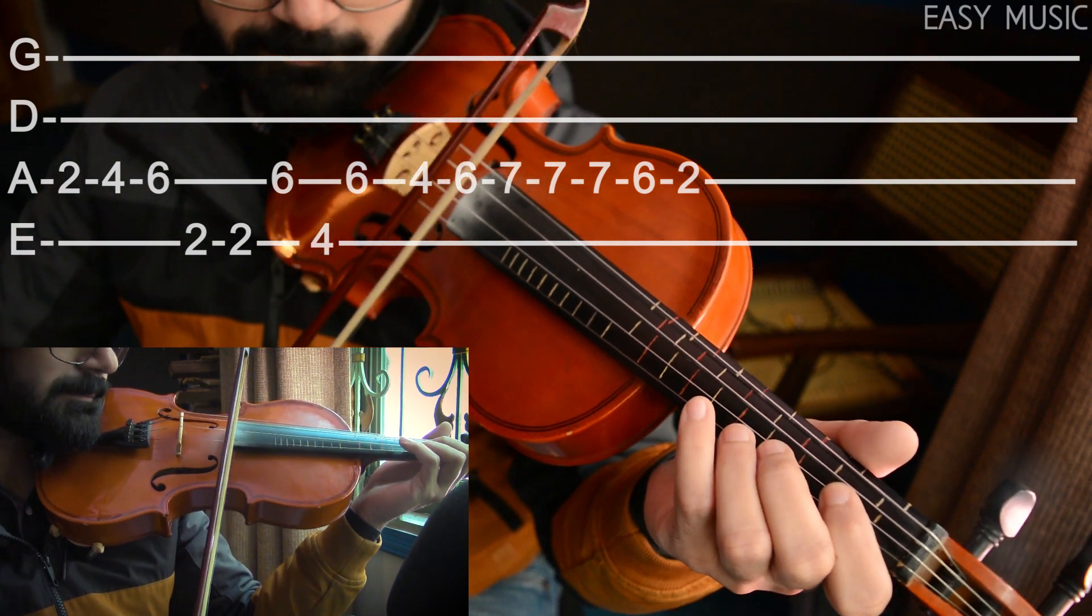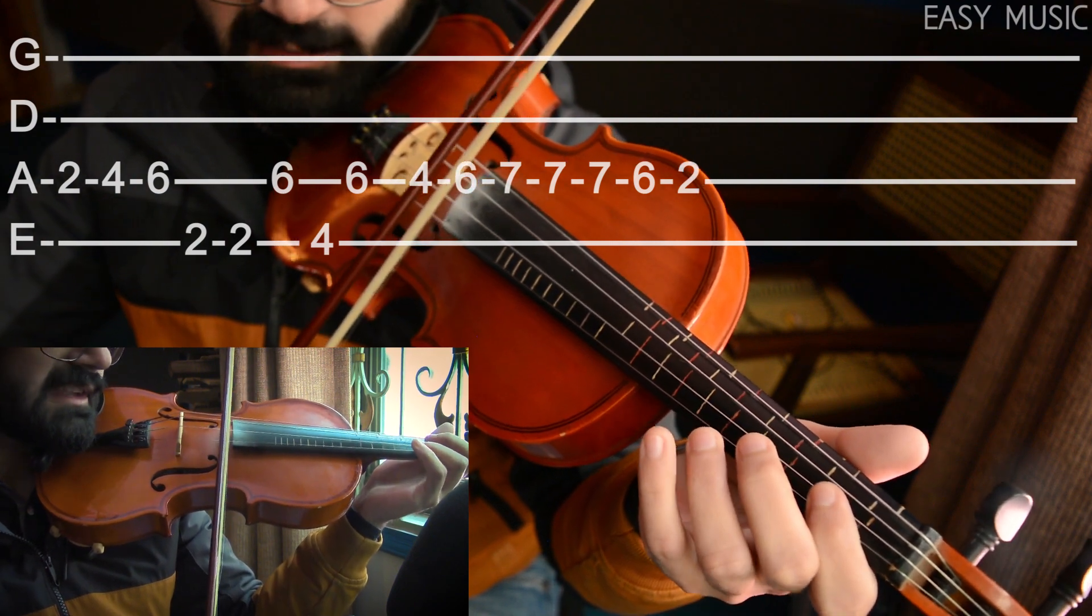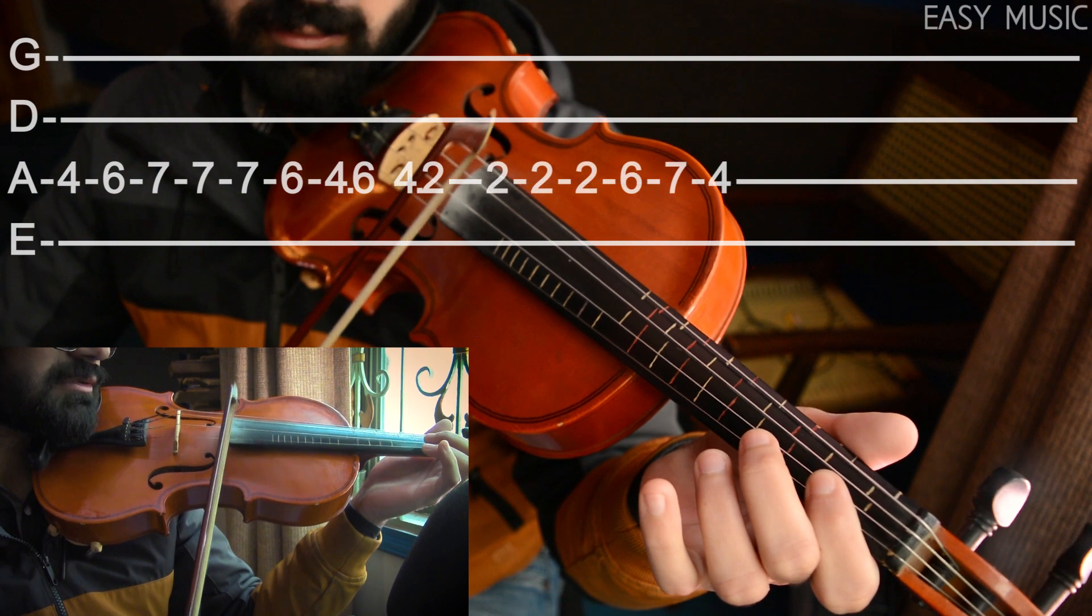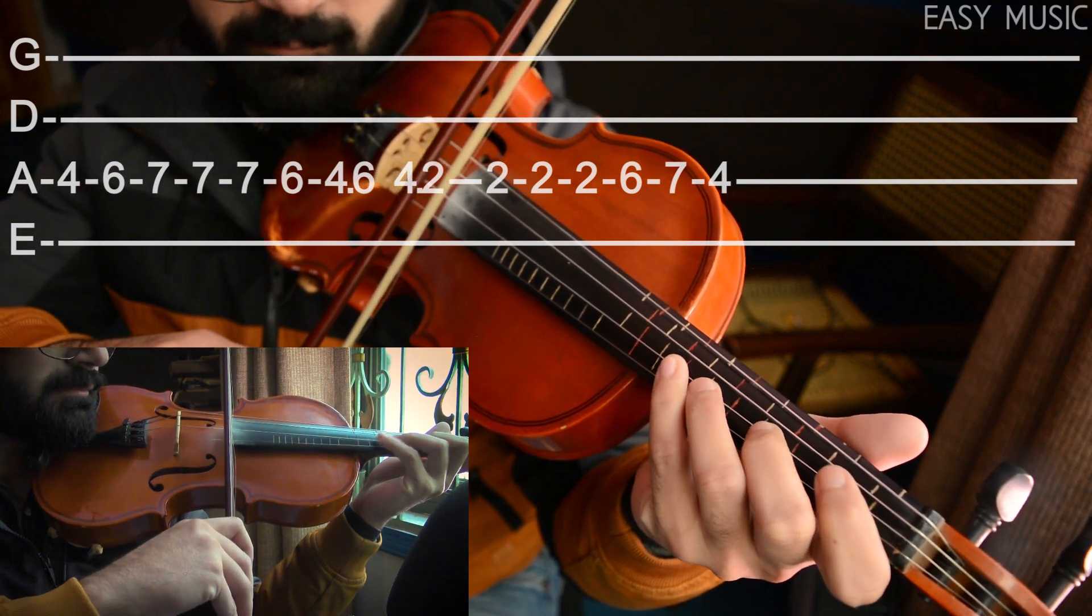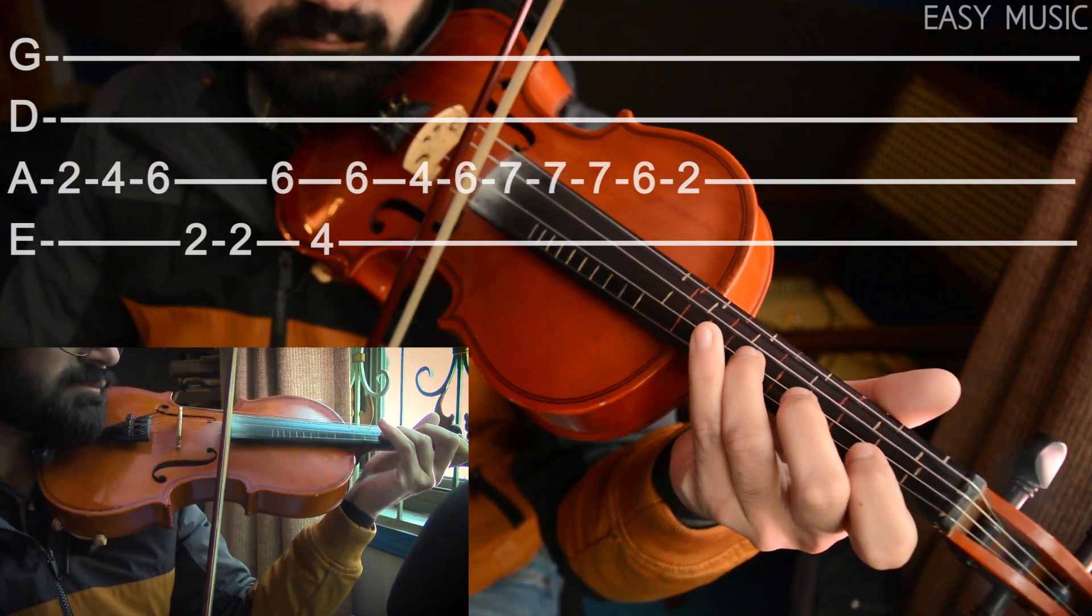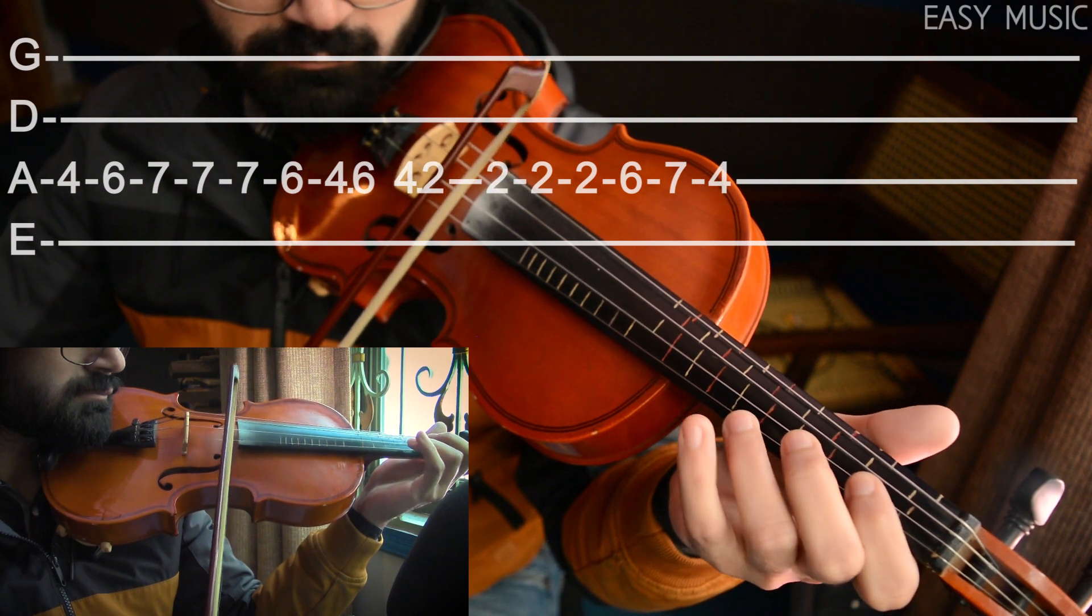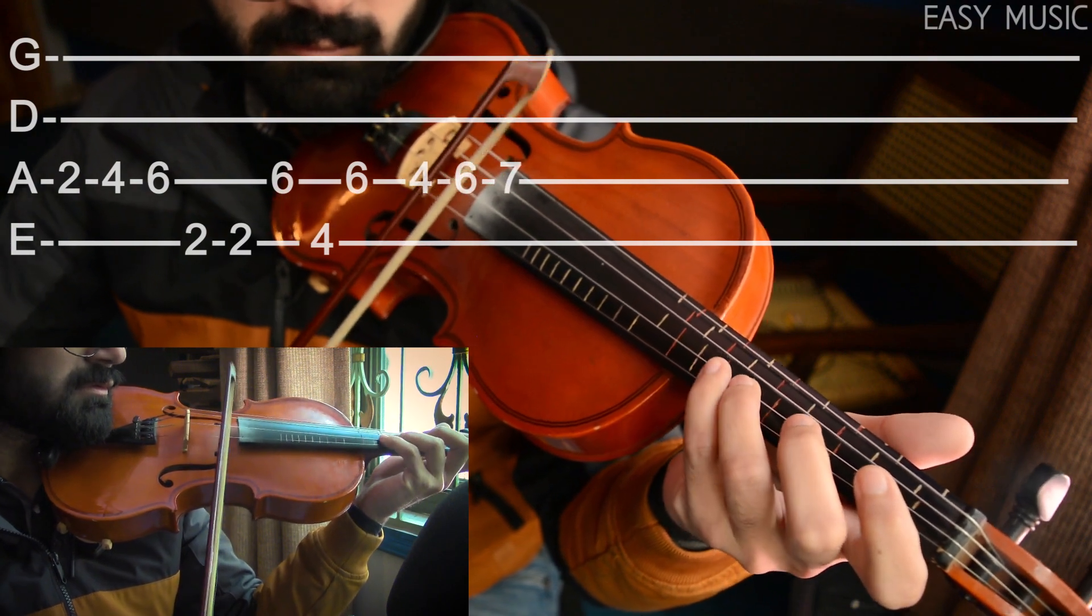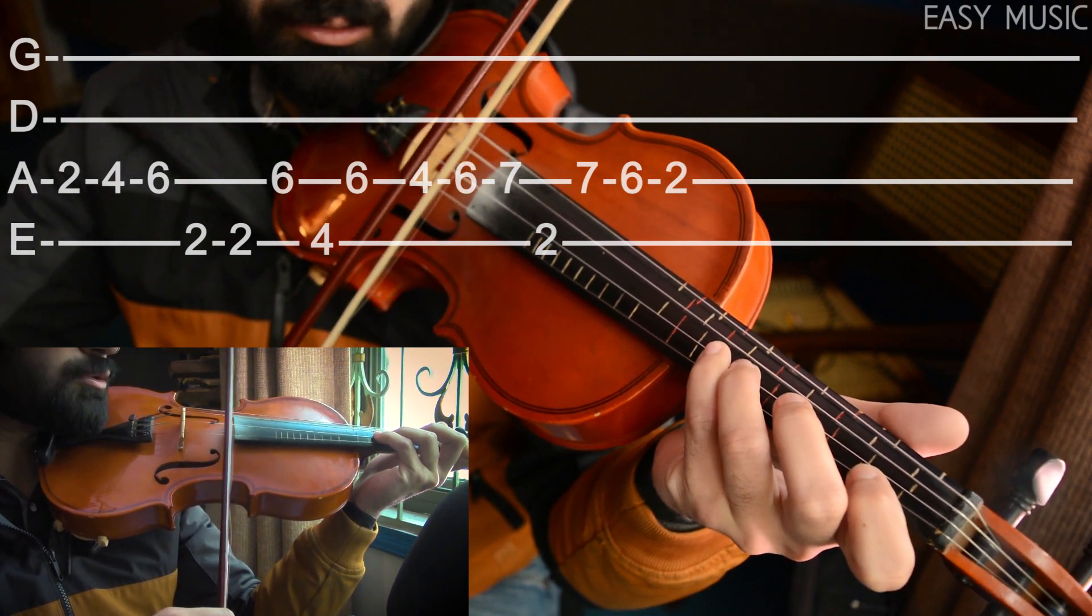So combining both we're gonna get... again the same thing and from here you have to tap and then comes second fret again, sixth, seventh, fourth. So the second part will be again the same thing.